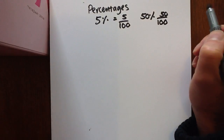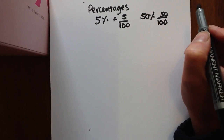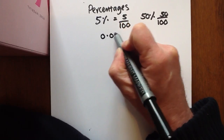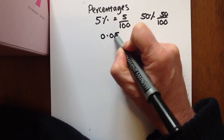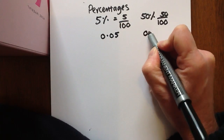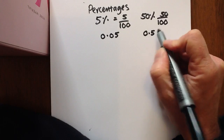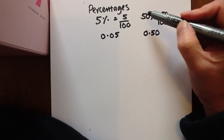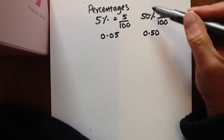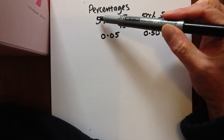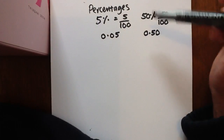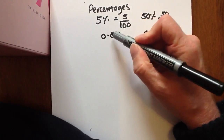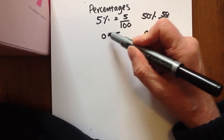These can also be converted to decimals. 5 out of 100 is 0.05, and 50% is 0.5. If we put the 0 on, 50% and the 5-0 sort of relate to each other, and that shows why 5% is not 0.5. 0.5 is 50%; 5% is 0.05.